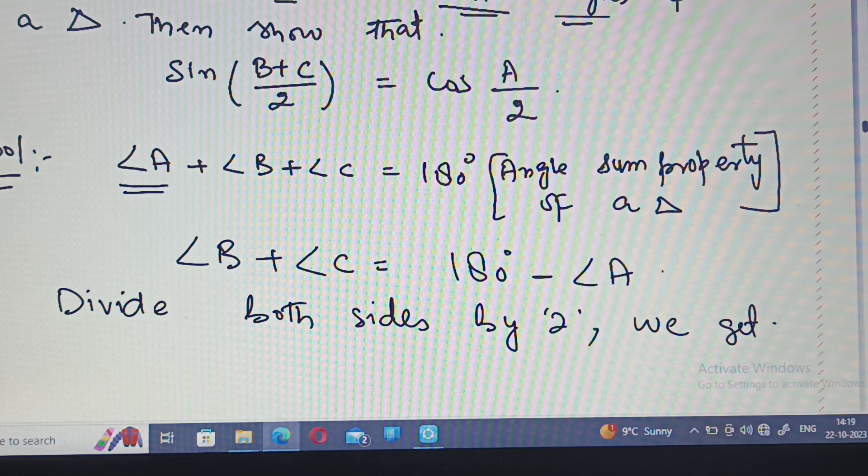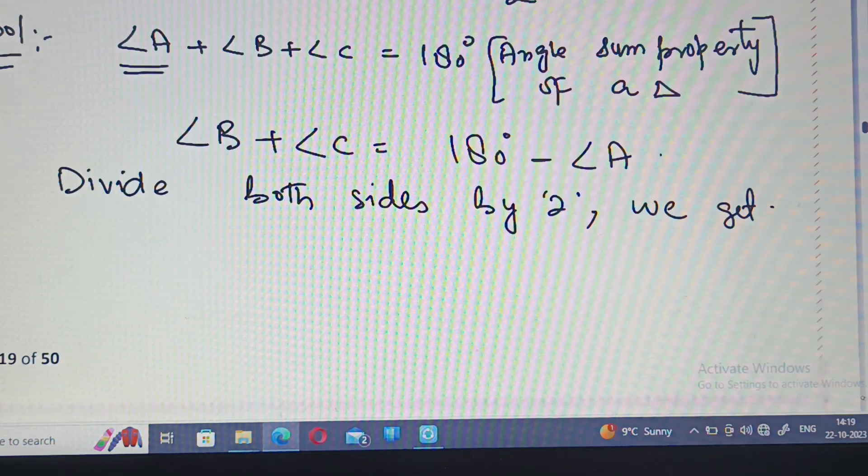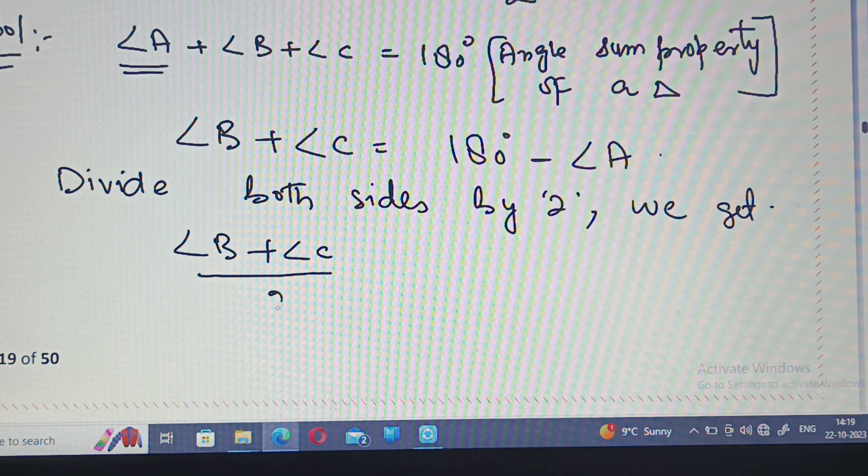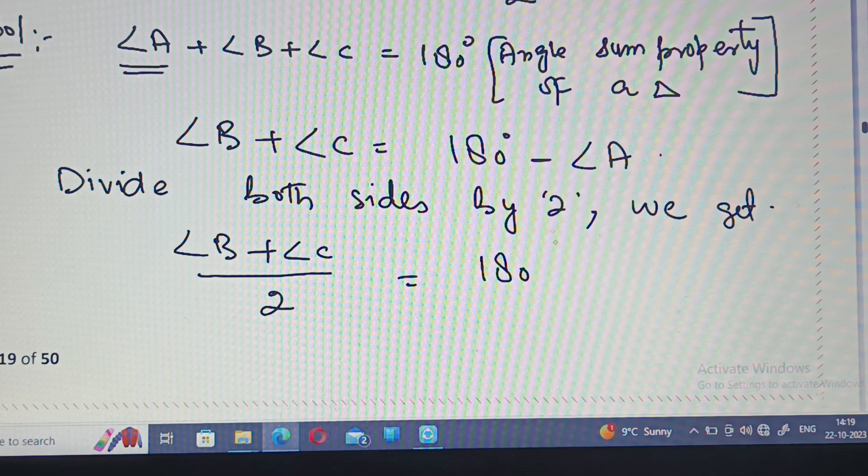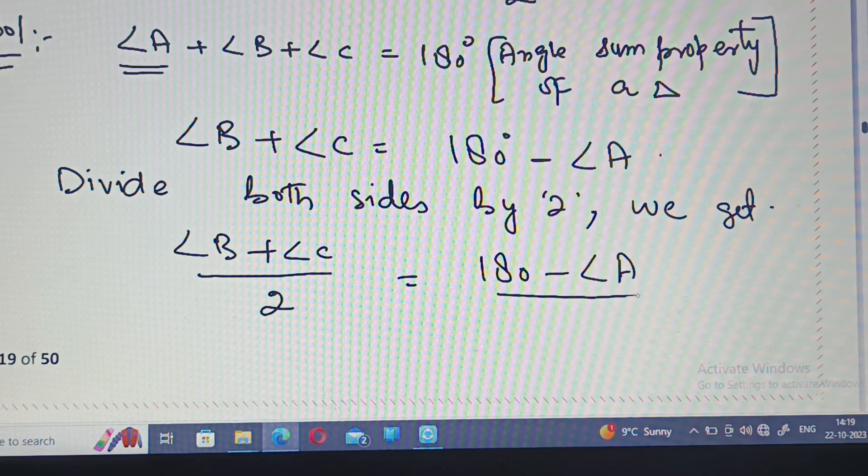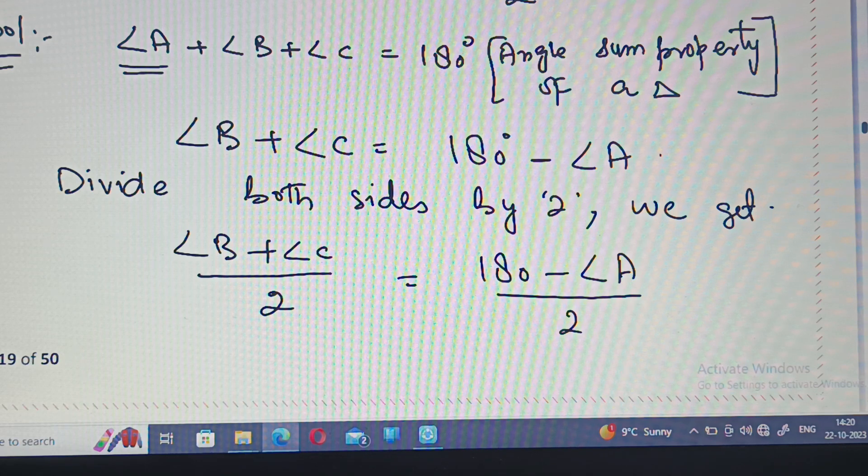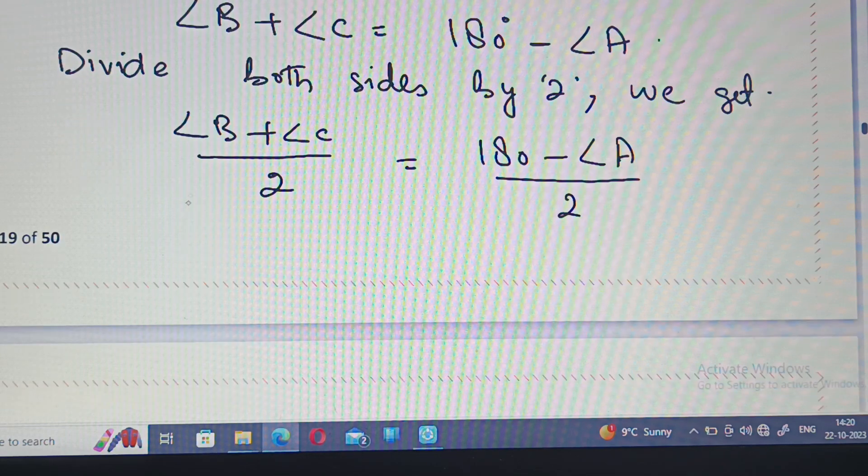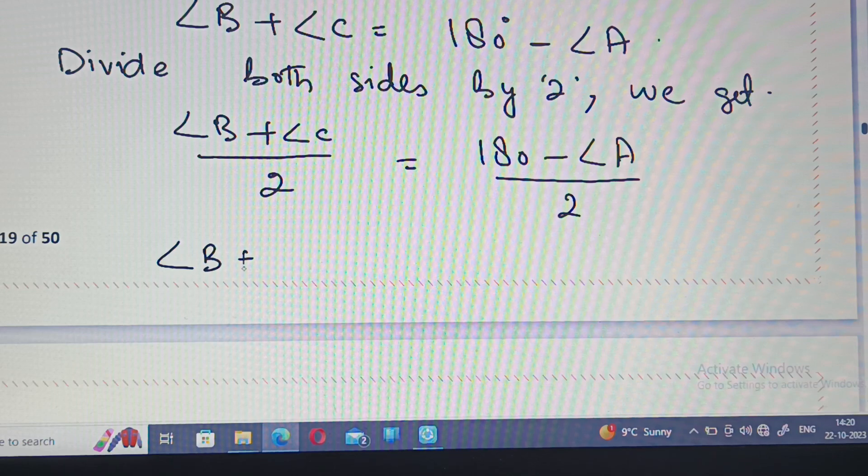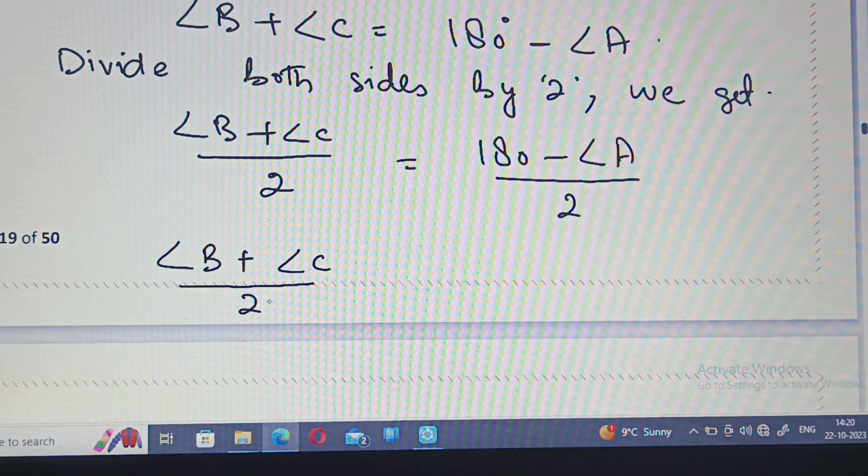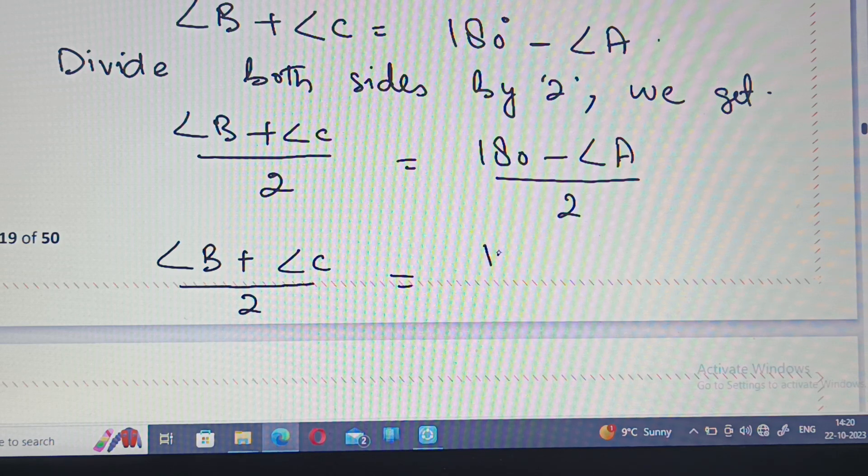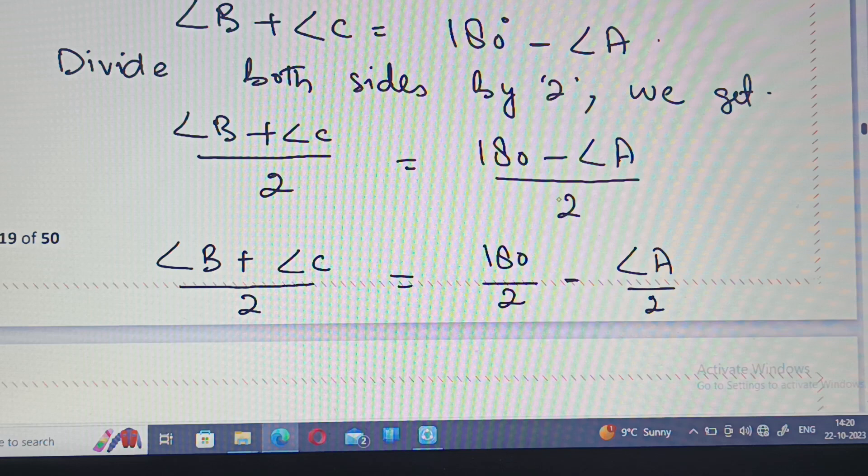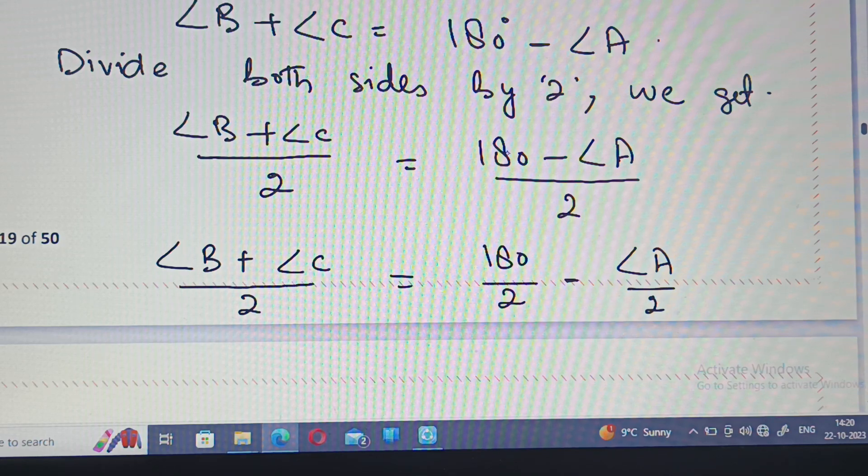Angle B plus angle C divided by two is equal to... 180 minus angle A divided by two. So angle B plus angle C divided by two equals 180 divided by 2 minus angle A divided by 2.